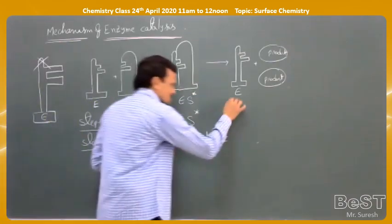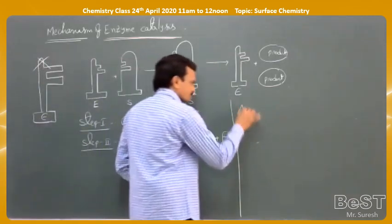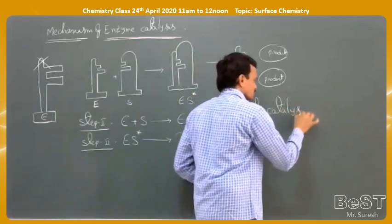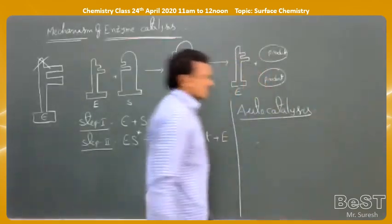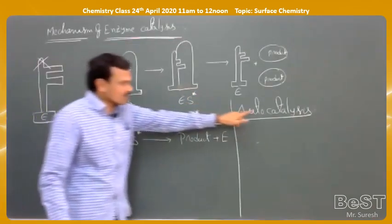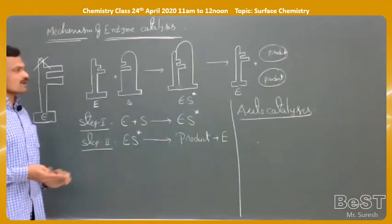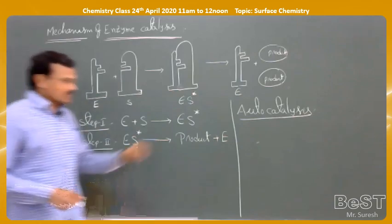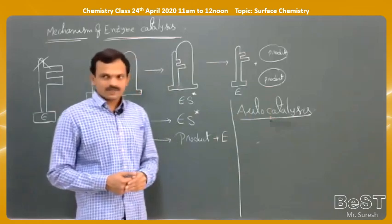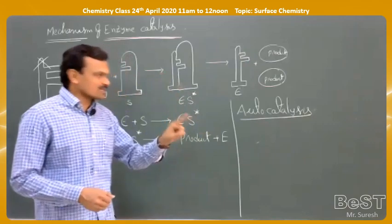One more catalysis process is auto catalysis. We have discussed homogeneous catalysis, heterogeneous catalysis, and enzyme catalysis. In all those examples, we take a separate catalyst. But in auto catalysis, we do not add any catalyst. During the reaction, the product formed in the reaction itself acts as a catalyst.